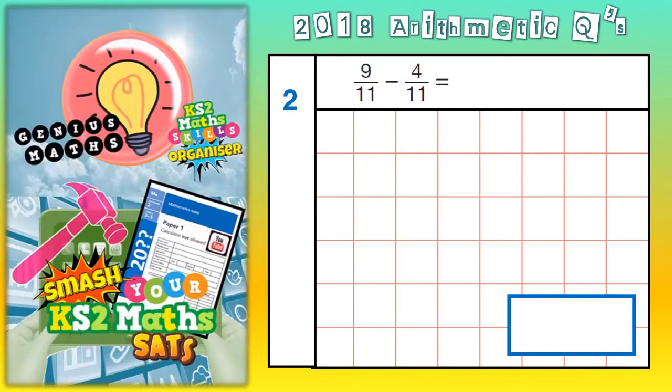Welcome all you arithmetic ninjas to question 2. And this is 9 elevenths take away 4 elevenths.